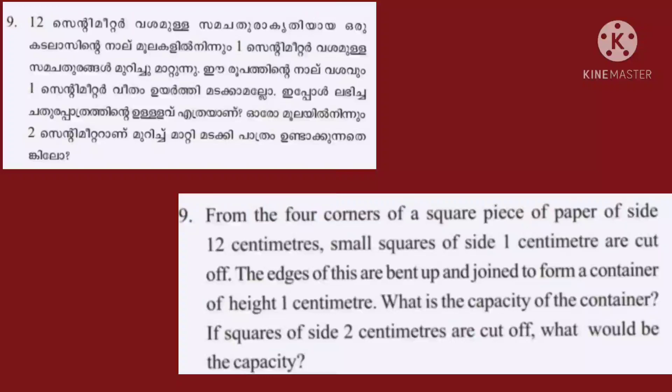From the four corners of a square piece of paper of size 12 cm, small squares of size 1 cm are cut off. The edges of this are bent up and joined to form a container of height 1 cm. What is the capacity of the container? If squares of size 2 cm are cut off, what would be the capacity?